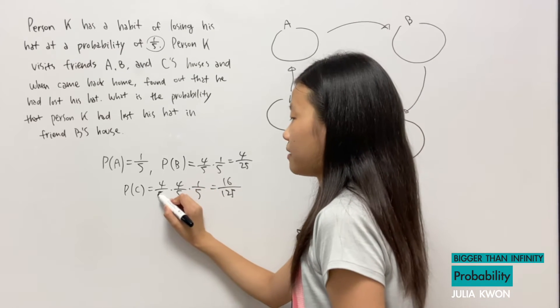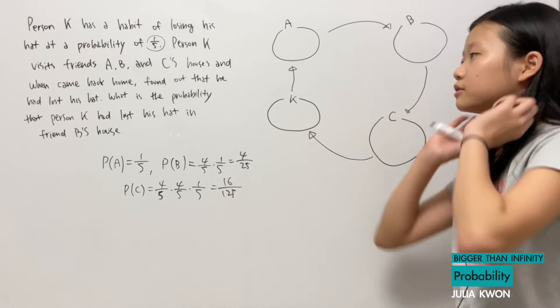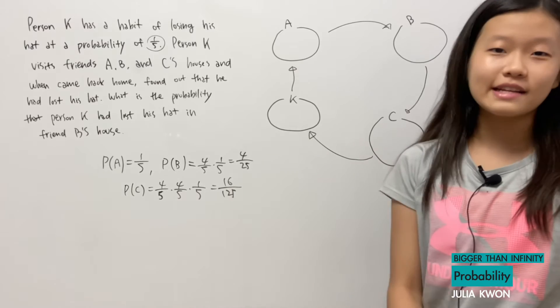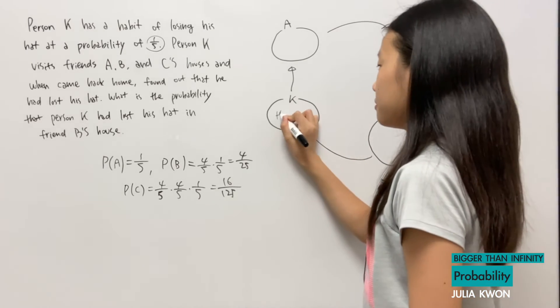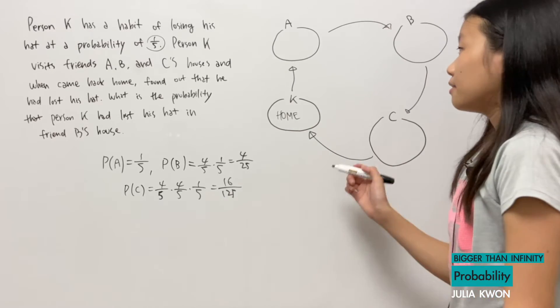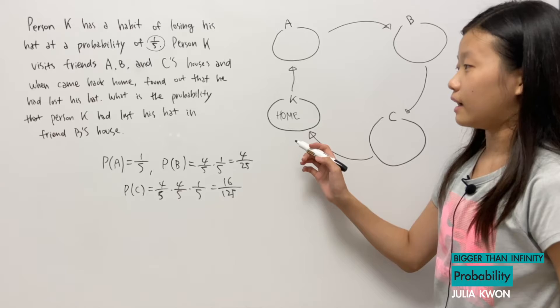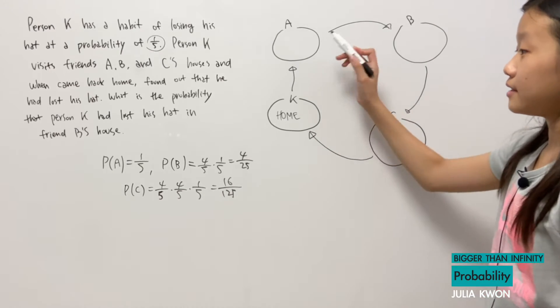Oh, this is a 5, by the way, looks like a 3. So if person K is in his house right now, at home, and he thinks, what is the probability that I will lose my hat in house A? That would be 1/5.